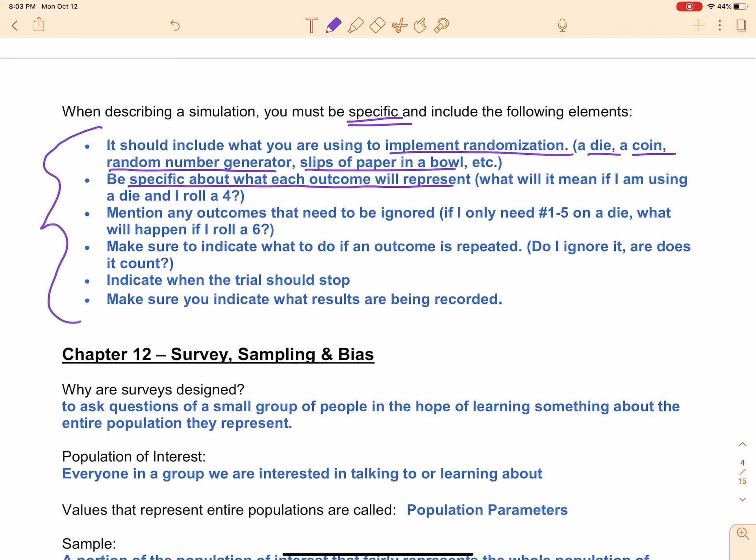The next thing you'll want to do is talk about specifically what each of those outcomes will represent. If I'm using a coin, then I have two outcomes. What does heads represent? What does tails represent? Choosing what outcome represents what does not have to be random. The actual rolling of the die, flipping the coin, choosing the numbers, that's the random part. You can assign what those numbers represent by choice.